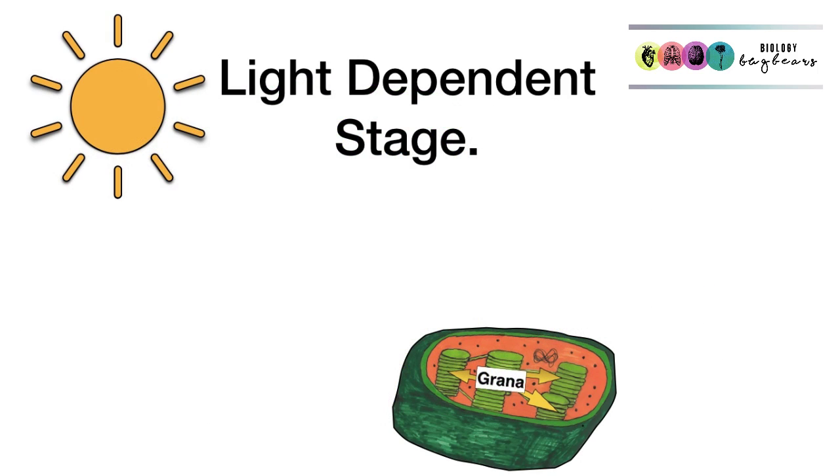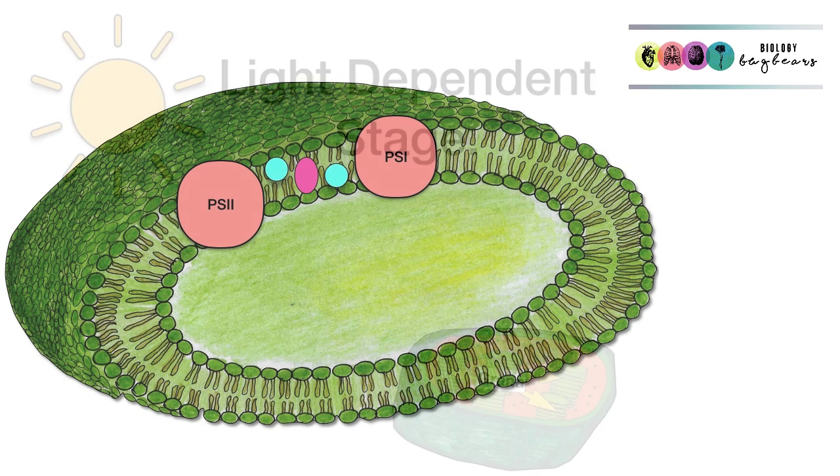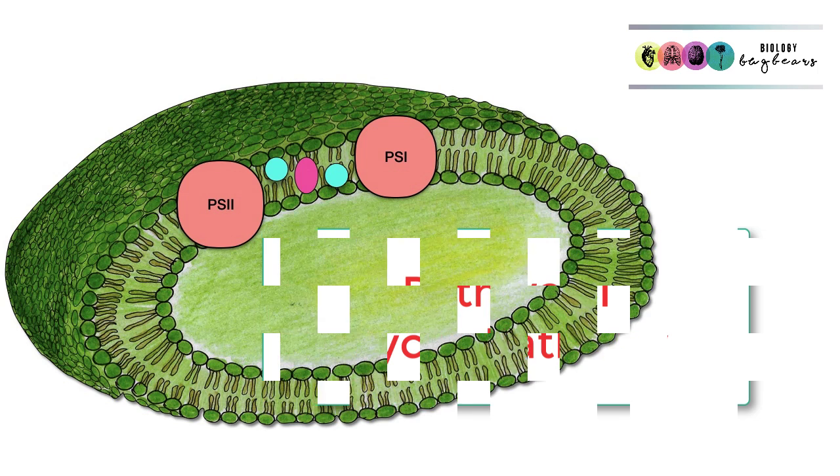The first part of photosynthesis is the light-dependent stage, and there are two pathways: pathway 1 and pathway 2. Let's start with pathway 1. It's known as the cyclic pathway, and it's happening in the thylakoid membranes inside those chloroplasts, and it involves only photosystem 1.